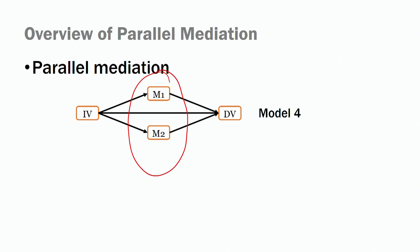I strongly recommend you keep it simple — two, perhaps three mediators that affect the relationship between your independent variable and your dependent variable. When you're running parallel mediation models, you need to adopt model number four in SPSS, in the process macro. Model number four is extremely important.